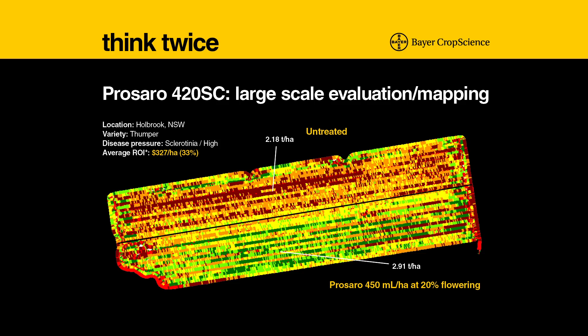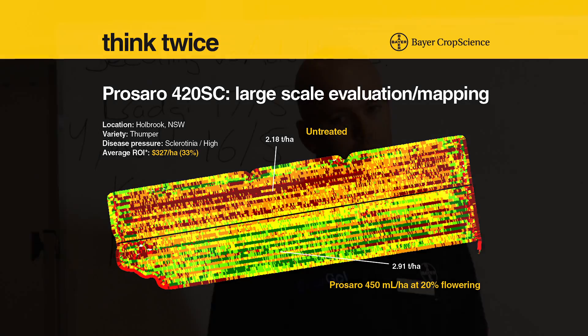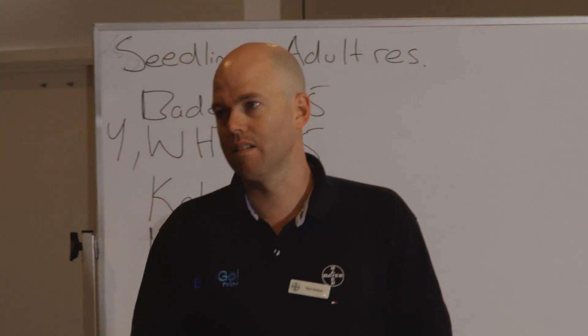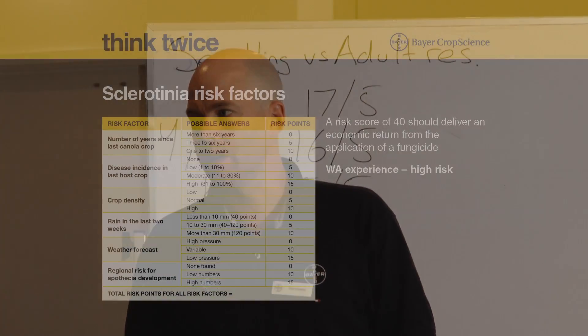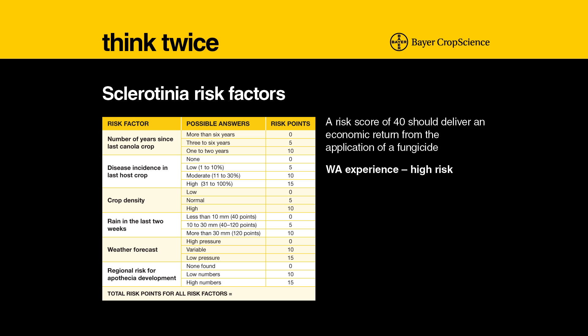You can see that from the yields as well — getting towards three tonnes per hectare with pretty big canopies.